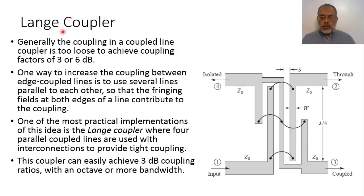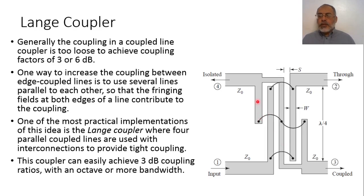Lange coupler is another type of coupled line directional coupler. The main difference in Lange coupler is that instead of a single coupled line section, we use an interdigit coupled line section. This interdigit structure is composed of multiple coupled line sections parallel to each other to increase the coupling coefficient.